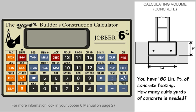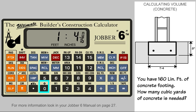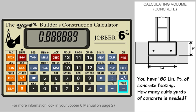With the calculator on, enter the thickness: 8 inches. Multiply by the width, which is 16 inches. Since we are already in feet mode, let's use 1 foot 4 inches. This is the area of the footing.